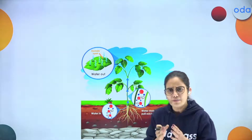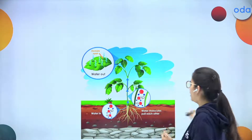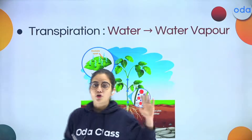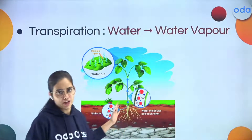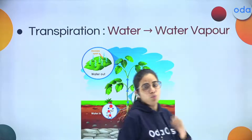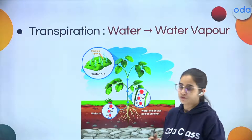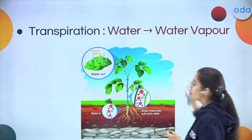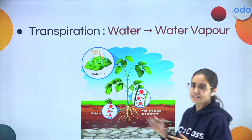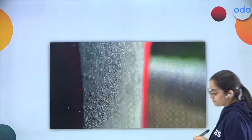Some amount of water is also added to the atmosphere through transpiration. Transpiration is when water is released from the surface of the leaves. So some water vapor is also contributed by leaves into the air.